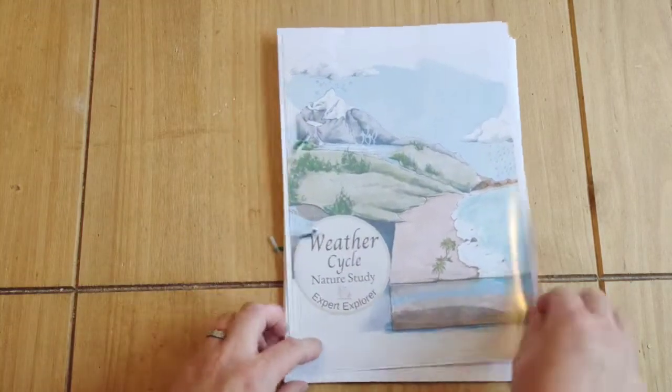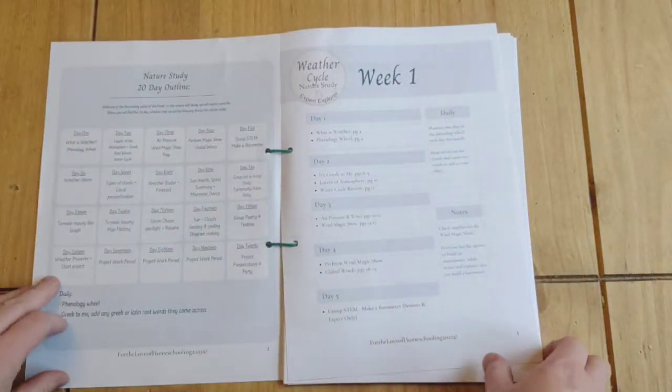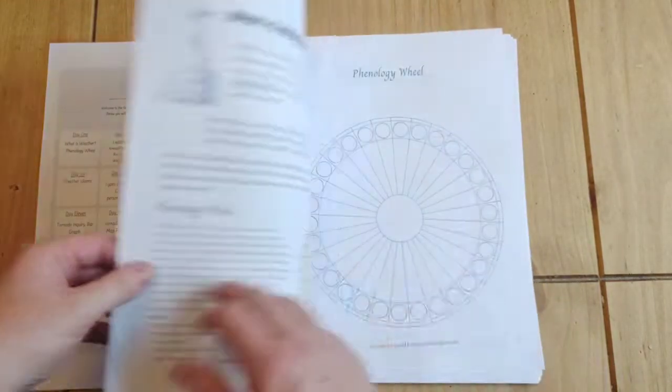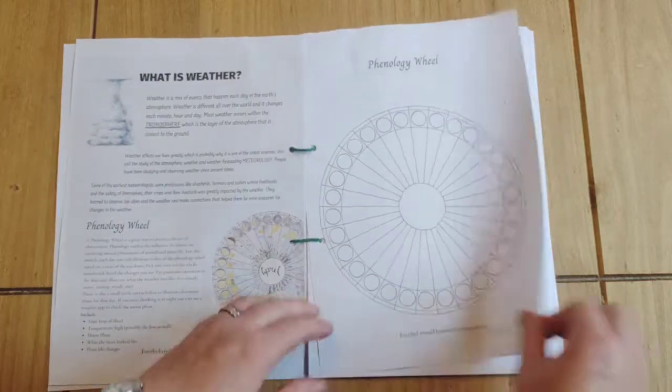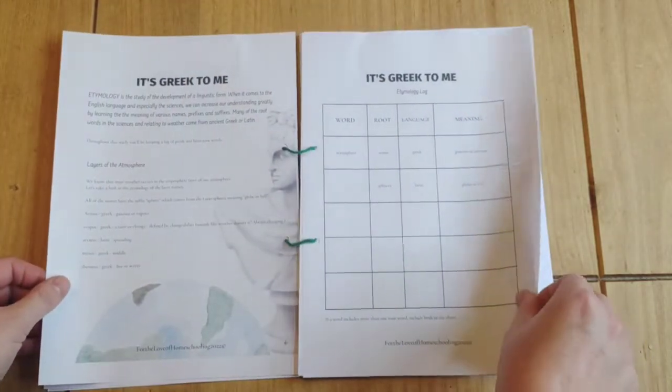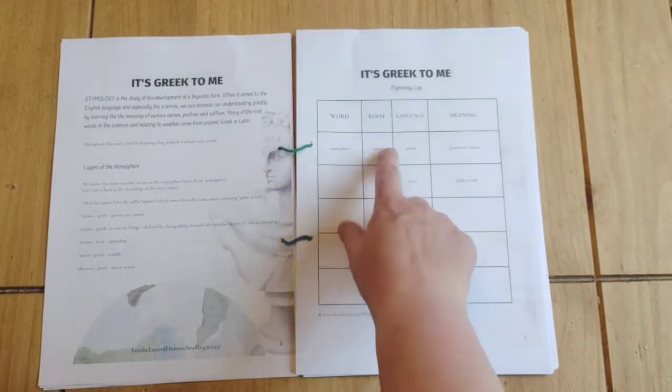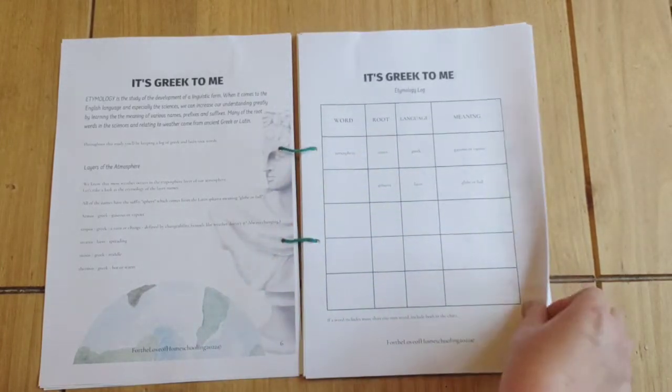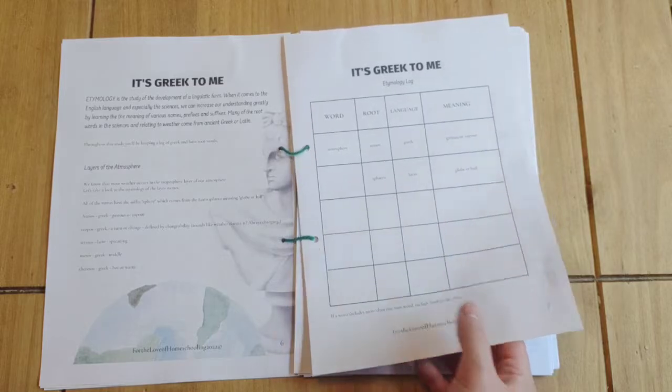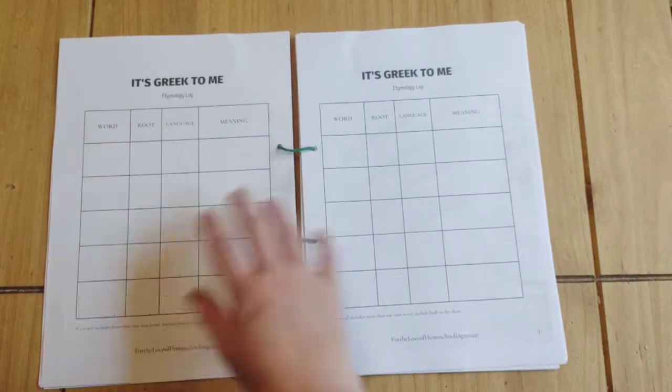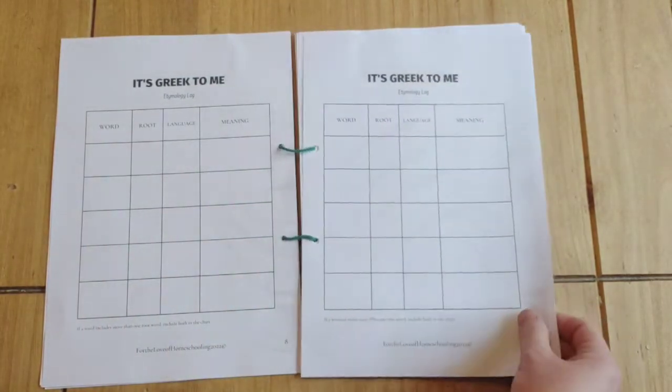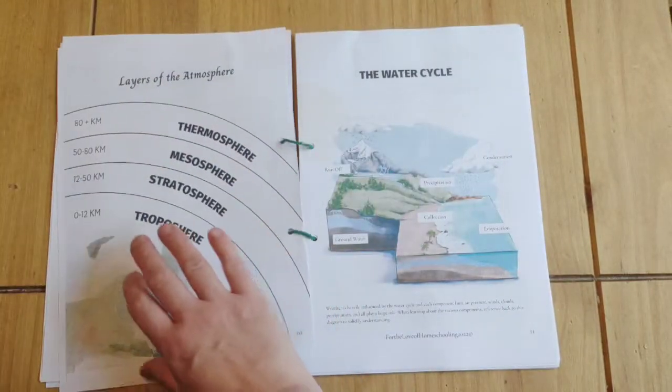Last but not least is the expert explorer. My almost twelve year old will be doing this. They've also got the phonology wheel. I thought it was nice because he's doing a bit of Latin anyway, but they get to look at root words in Greek or Latin. And they're going to keep a log of that during the month. And they'll come back and write down the different words in there.